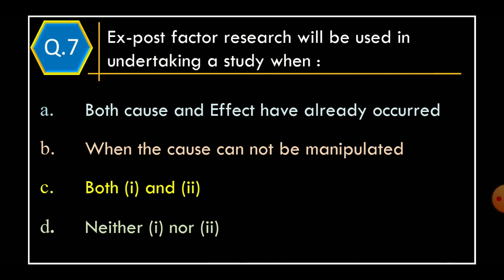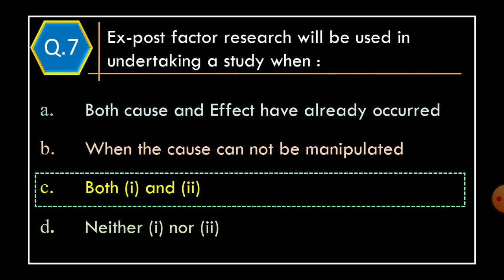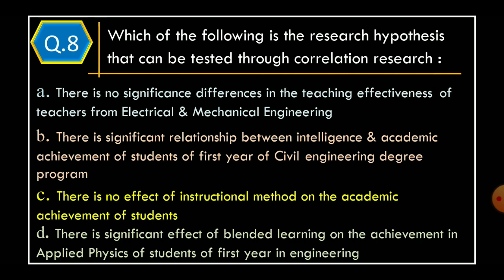Question 7. Ex post facto research will be used in undertaking a study when: Option A: Both cause and effect have already occurred. Option B: The cause cannot be manipulated. Option C: Both Option A and Option B. Option D: Neither Option A nor Option B. The correct option is Option C, both Option A and Option B.